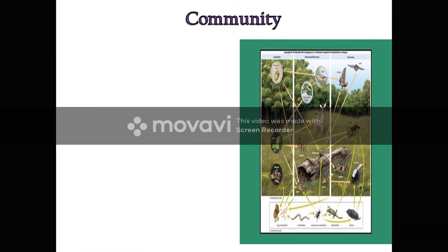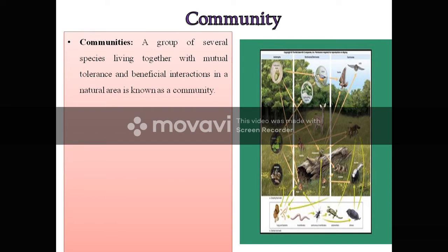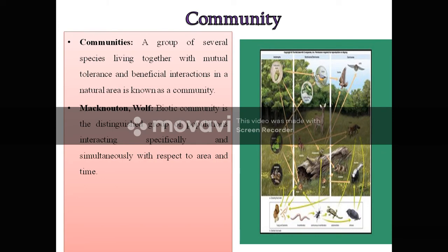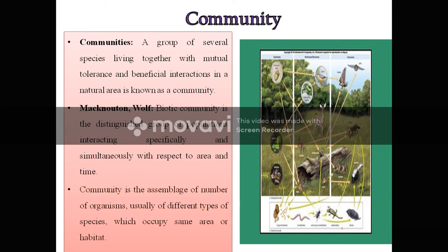The next important term is community. In the living world, there is a variety of organisms that live in a given unit area. A community is a group of several species living together with mutual tolerance and beneficial interactions in a natural area. According to McNaughton and Wolf, a biotic community is a distinguished group of populations interacting specifically and simultaneously with respect to area and time. Community is the assemblage of a number of organisms, usually of different species, which occupy the same area.